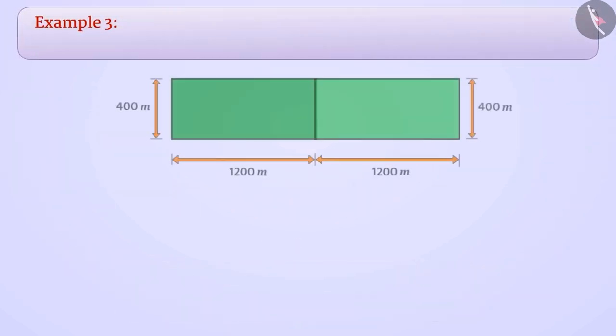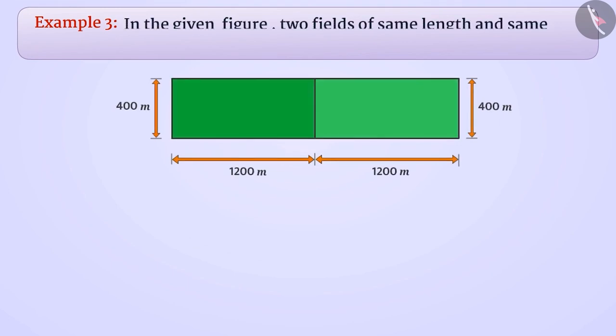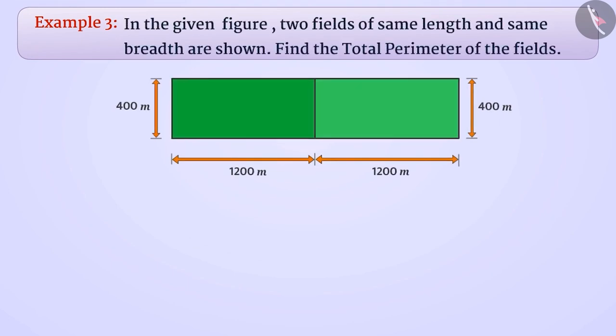Next example. In the given figure, two fields of the same length and same breadth are shown. Find the total perimeter of the fields. We have to find the total perimeter of the two rectangular fields. The length of both fields is 1200 meters and the breadth is 400 meters.